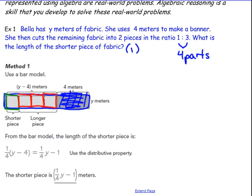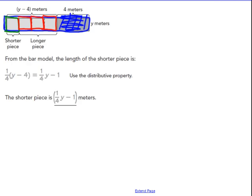This is the entire blue rectangle minus the 4 meters. What's left is Y minus 4 meters. The Y minus 4 meters is the remaining piece cut into a green box and 3 red boxes. From the bar model, the length of the shorter piece is only 1 out of those 4 pieces that's left. It's 1/4 (Y - 4).